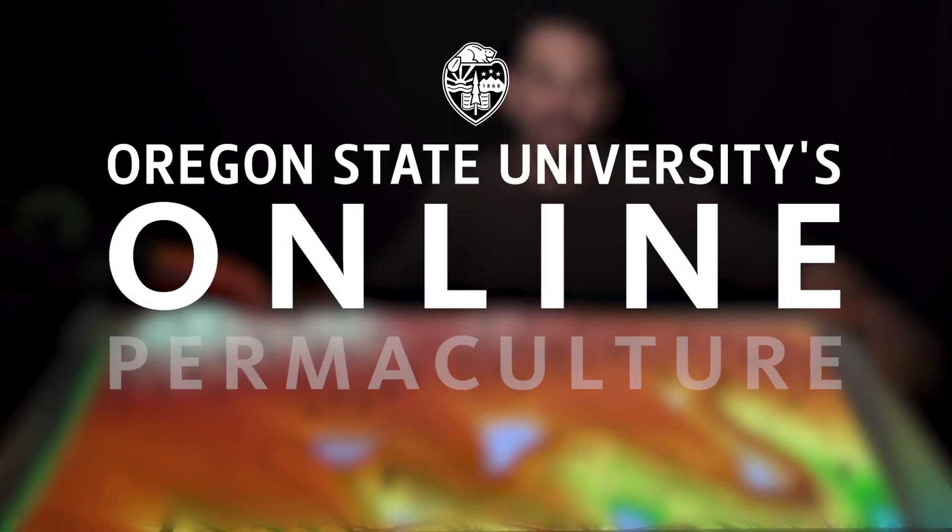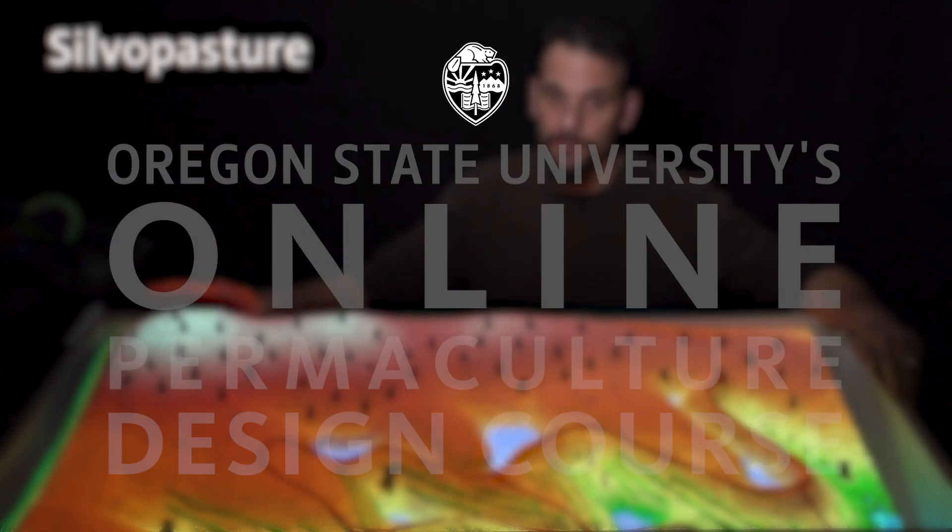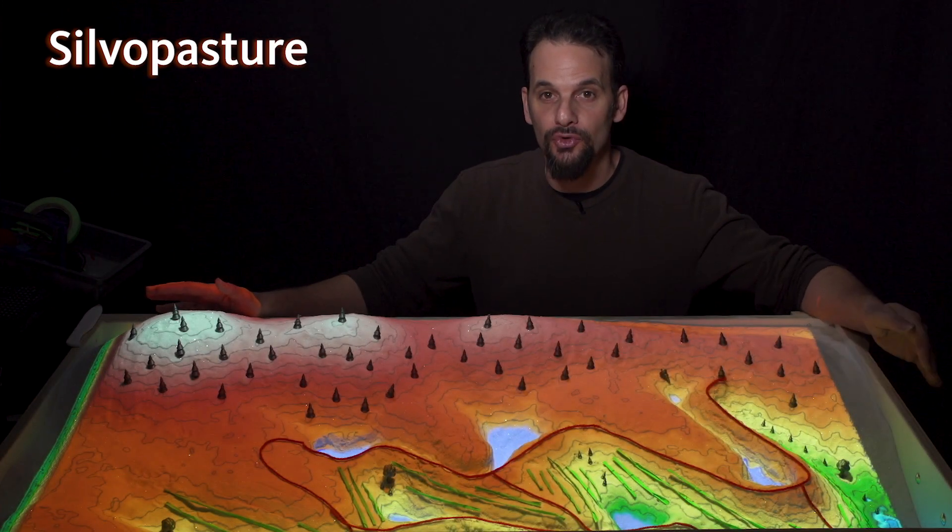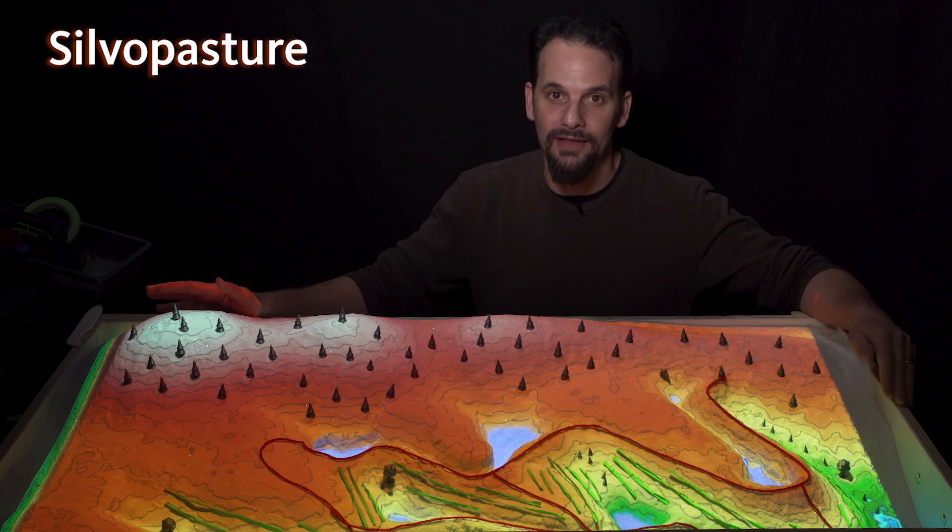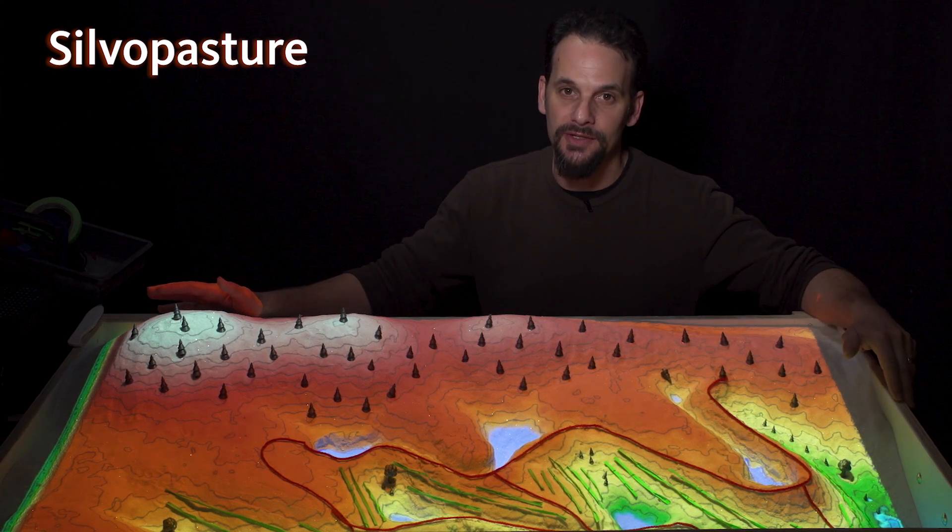Hello again. We're going to talk now about forestry in this system and what we call silvapasture. Silvapasture is defined as the intentional combination of trees, forage plants, and livestock together as an integrated, intensively managed system.